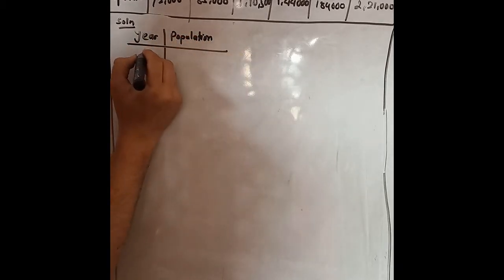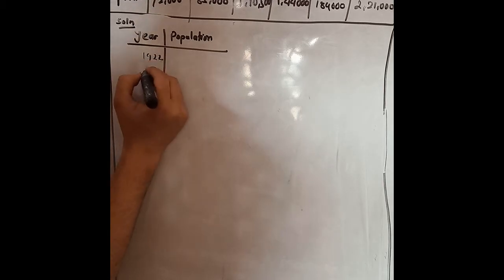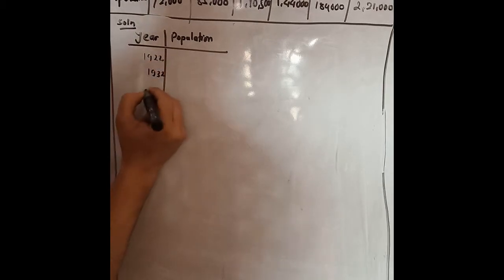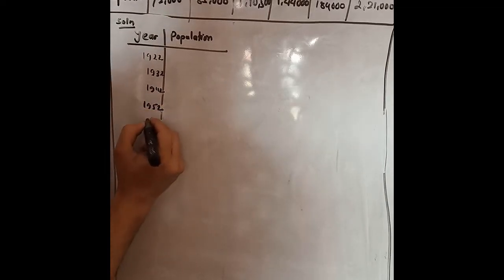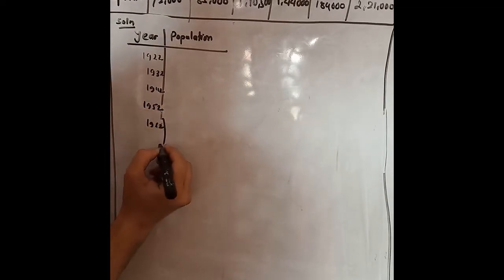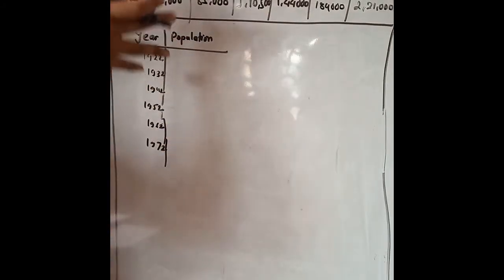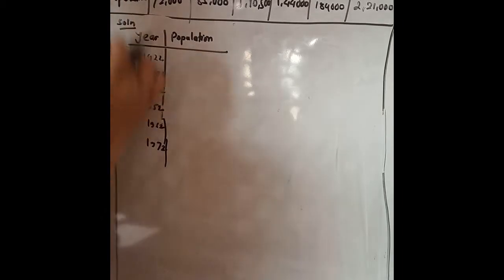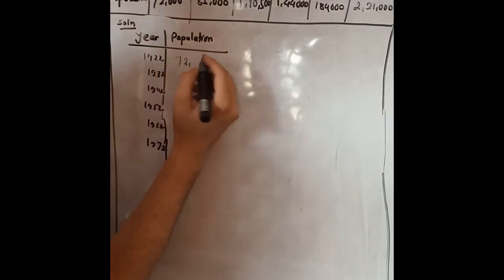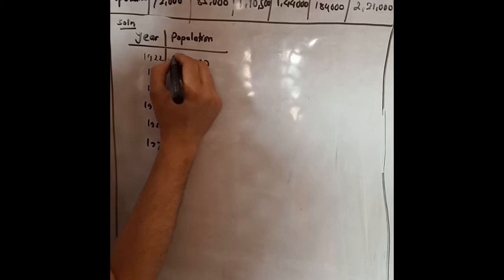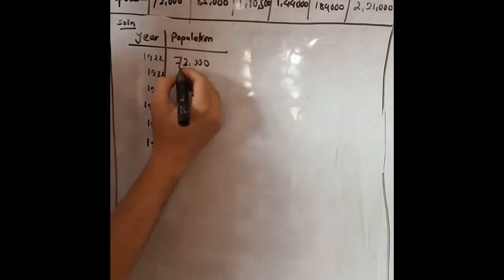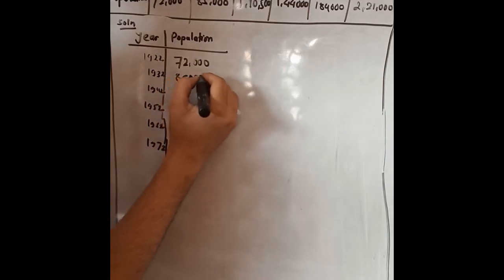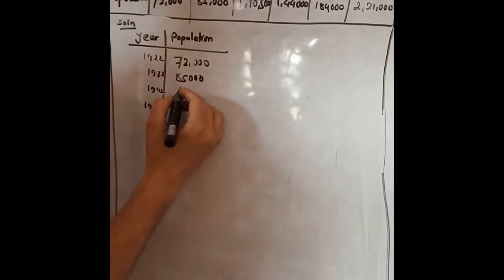Here we need to make a table. We copy the different year population values: the population is 72,000 in 1922, and 85,000 in 1932.